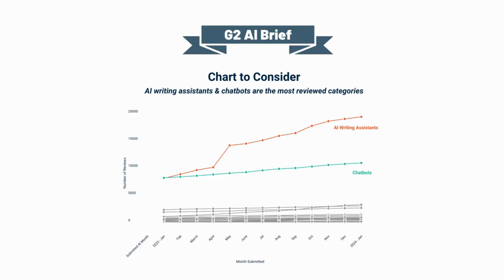It's also important to look at the top categories on G2 not just from the perspective of traffic or G2 score, but also in terms of how many reviews they've had over time. This past month, those top categories were AI writing assistant — which we saw as a top category before — and chatbots, also a popular category for reviewers. These are solutions being used a great amount, and this speaks to the importance of both content creation and conversational interfaces.